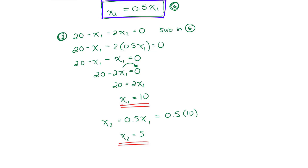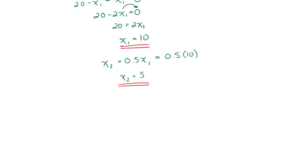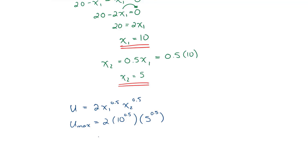Now we have our optimal values x1 and x2. We determine the associated utility by substituting into the utility equation: U equals 2 · x1^0.5 · x2^0.5. Maximum utility equals 2 times 10^0.5 times 5^0.5, giving 14.1421 as the maximum utility. A different approach, but the same end results: x1 equals 10, x2 equals 5, and maximum utility is 14.1421.